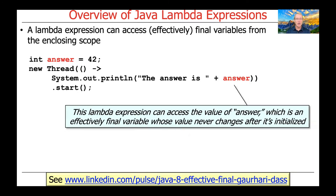A Lambda expression can also access so-called effectively final variables or plain old final variables from the enclosing scope. As you can see here, we define a local variable called answer which we assign the value 42, and then we can actually access that value inside the context of the Lambda expression. This use of answer is what's known as an effectively final variable whose value never changes after it's initialized up to the point where it's used in a Lambda expression.